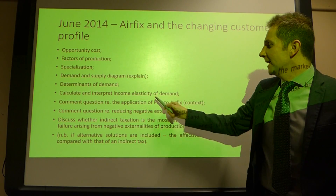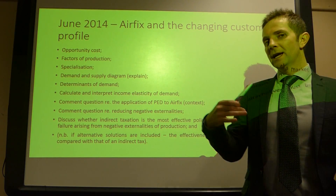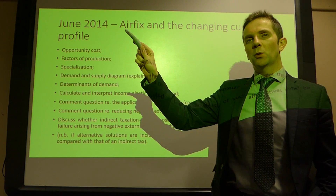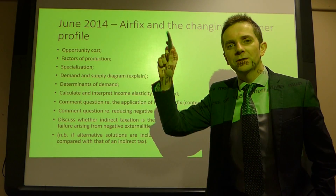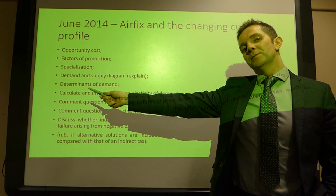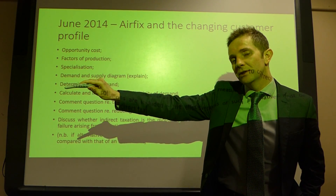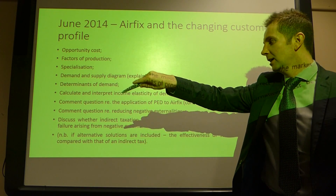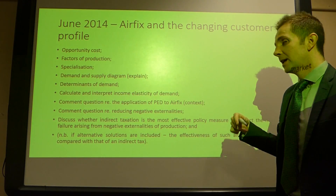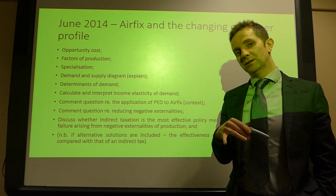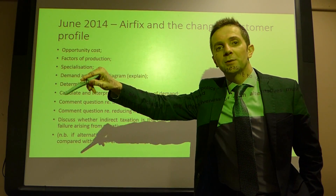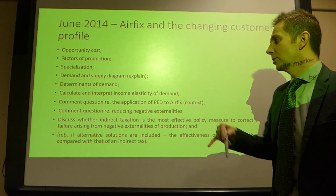You were also asked to calculate and interpret income elasticity of demand. Remember: for any elasticity calculation, percentage change in quantity demanded is always on the top line. For price elasticity of demand, it's percentage change in quantity demanded divided by percentage change in price. For income elasticity, percentage change in income goes on the bottom line. For cross price elasticity, it's percentage change in quantity demanded of good A on top, divided by percentage change in price of good B on the bottom.